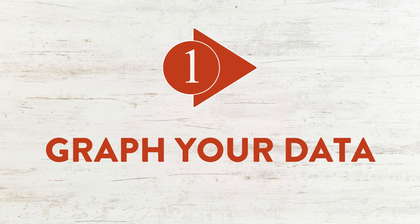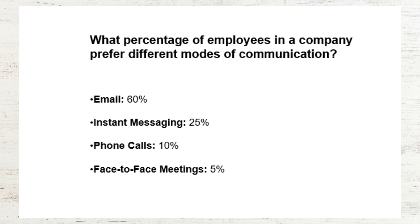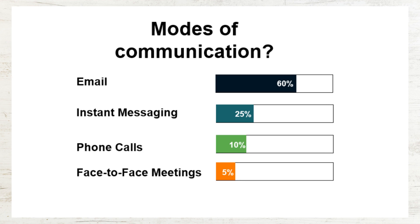Number 1 is: Graph your data. Slides that present raw data encourage audience members to read and make sense of it themselves — it will be the slide that captures their attention, not what you say. Instead, you could present it like this: it is already clear from the title of the slide what the audience will learn, and charts support the slide and make it easier to understand.